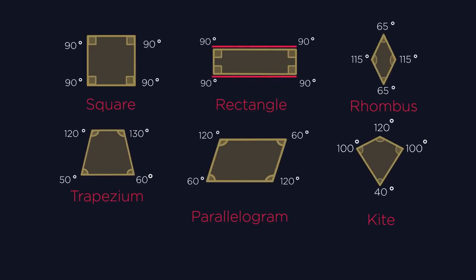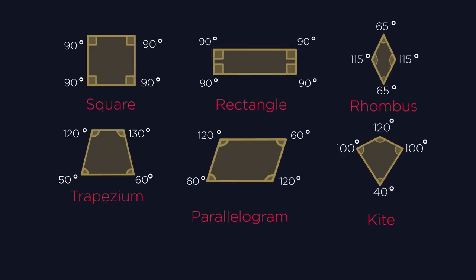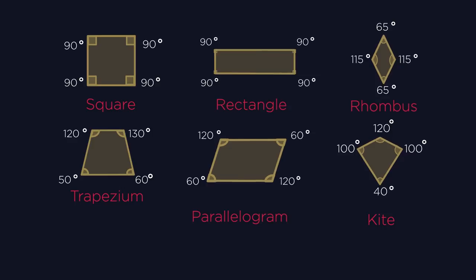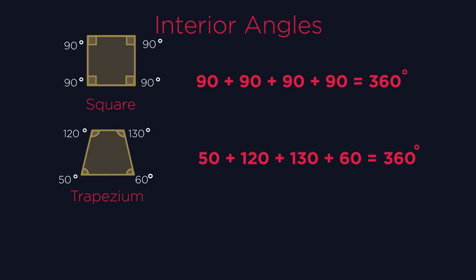So they all have four sides, they all have four angles, they all have four vertices or corners. What about the sum of the interior angles? The interior angles always add up to 360 degrees.